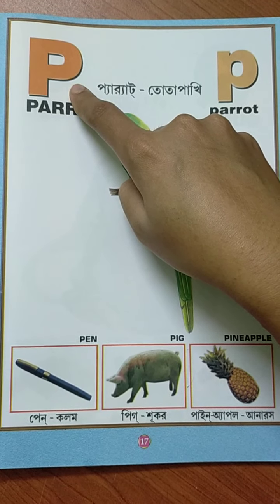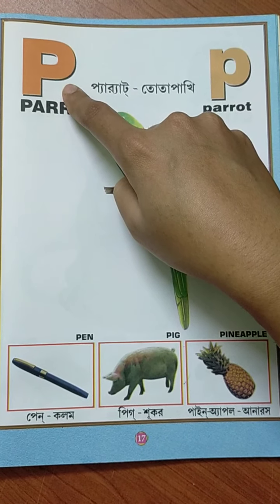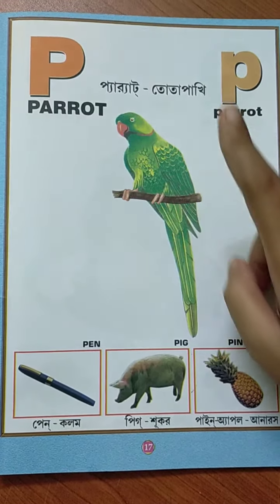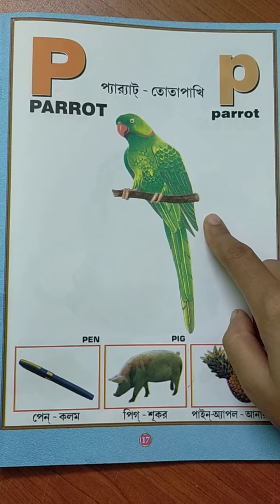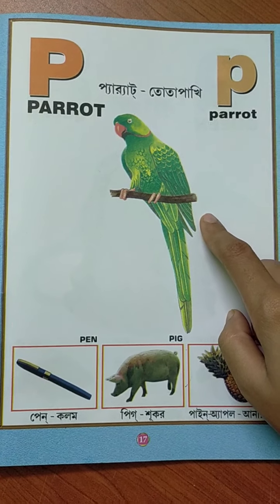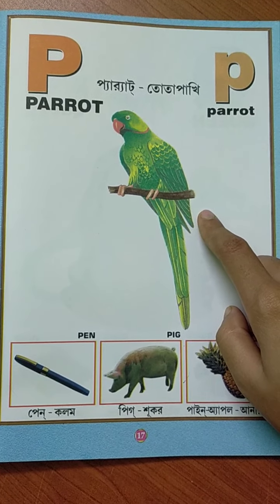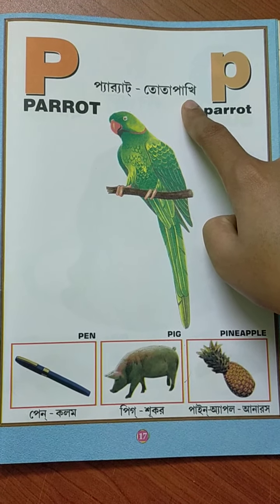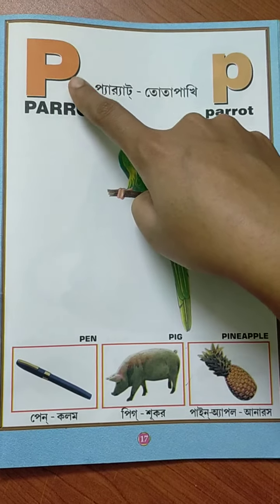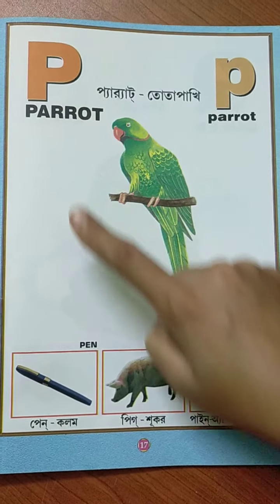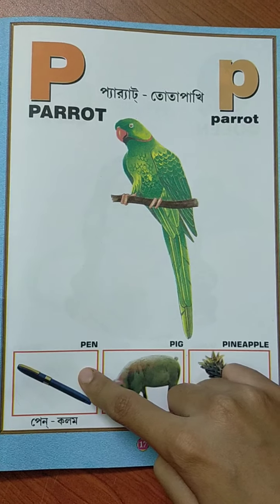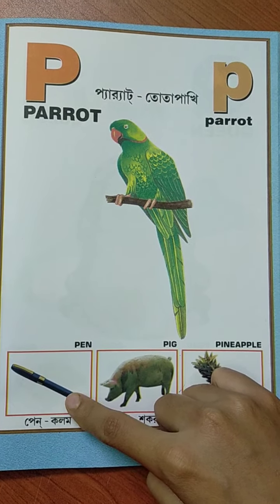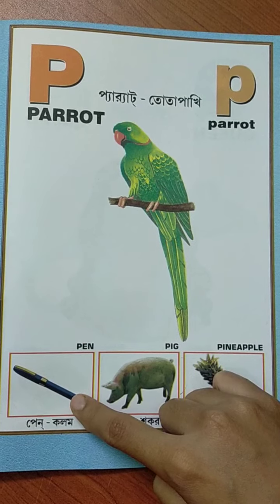This is P. Eta holo P. P for parrot. Parrot mane holo totapakhi. P for pen. Pen mane holo kolom.